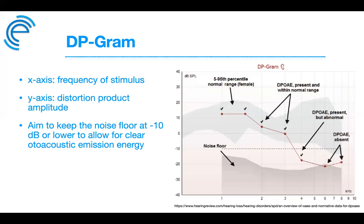The x-axis is frequency and the y-axis is the distortion product level. The noise floor during testing should be about −10 dB or lower to allow clear OAE detection. For diagnostic DPOAEs, runs should be repeated twice to verify reliability; a ±2 dB change is acceptable. A rough guideline is that the DPOAE should be above the noise floor by at least 6 dB, though this can vary by instrument protocol and normative data.